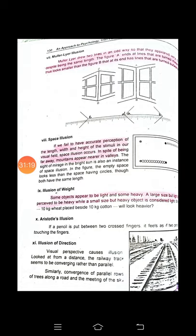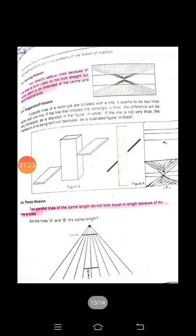There is also the Hering illusion. Two straight vertical lines are shown in the center, with a radiating structure of lines at the top and bottom. Because of the lines on both sides, the straight vertical lines do not look straight — they seem to be distended at the center and bent inwards at the ends. They actually are straight lines, but the surrounding lines create this illusion.